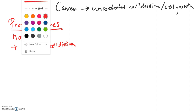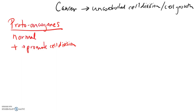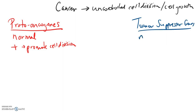On the opposite side of the coin, on the negative side, we have tumor suppressor genes. These are going to suppress cell division. So these work together in the cell cycle — we have sort of an on switch and an off switch. They work together to make sure that cell division occurs when it should, but it doesn't occur when it shouldn't.